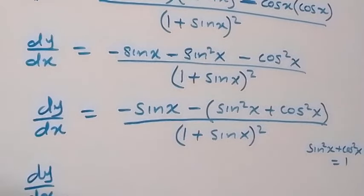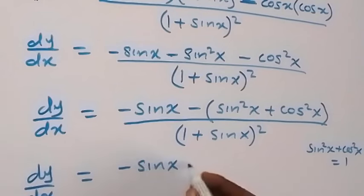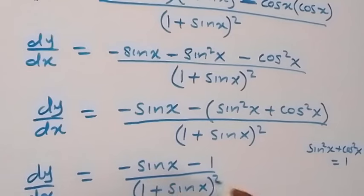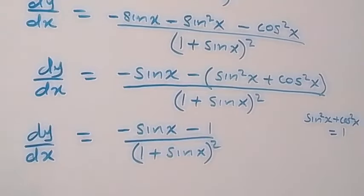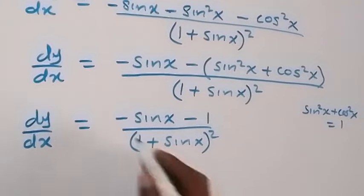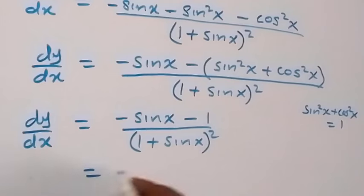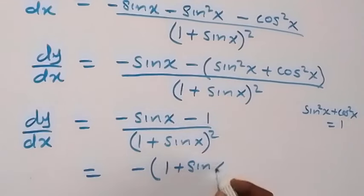So dy/dx now is minus sin x minus 1, divided by 1 plus sin x squared. We can rewrite it as, when we factor minus out, dy/dx equals minus 1 plus sin x over 1 plus sin x squared.